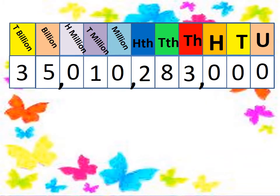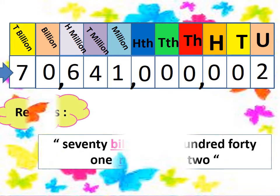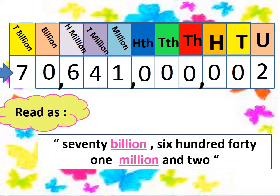Now if we have this number and want to read and write it in words, we start from the left: thirty-five billion, two hundred eighty-three thousand. Another one: seventy billion, six hundred forty-one million, and two — that means two in the units place, with zeros in tens, hundreds, and the other empty places.